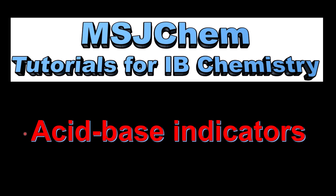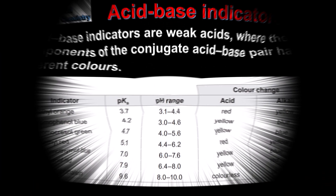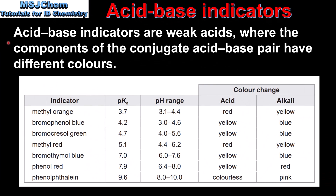This is MSJChem. In this video I'll be looking at Acid Base Indicators. Acid Base Indicators are weak acids where the components of the conjugate acid base pair have different colors. In this table we can see some examples of acid base indicators, which can be found in the Chemistry Data Booklet.